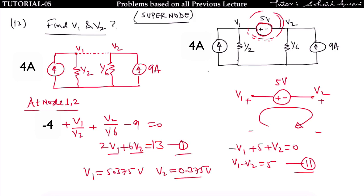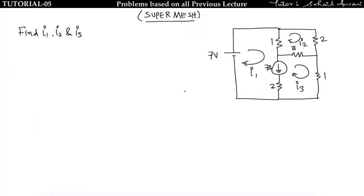In the super node concept, when an ideal voltage source is present between two nodes, we cannot apply nodal equation directly because we don't know how much current flows through the ideal voltage source. So we apply the super node concept: replace the voltage source, apply nodal at both nodes simultaneously to get one equation, then apply KVL inside the super node to get a second equation, and solve both to find v1 and v2.